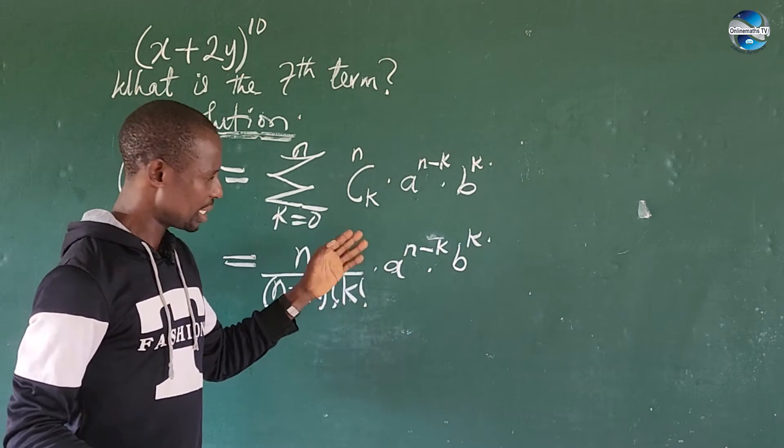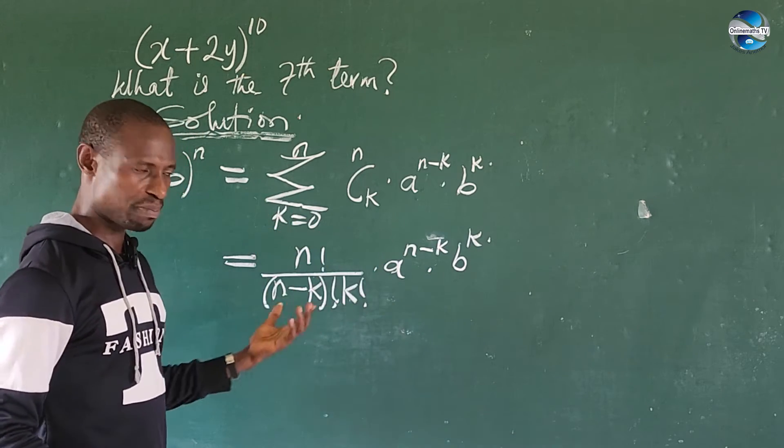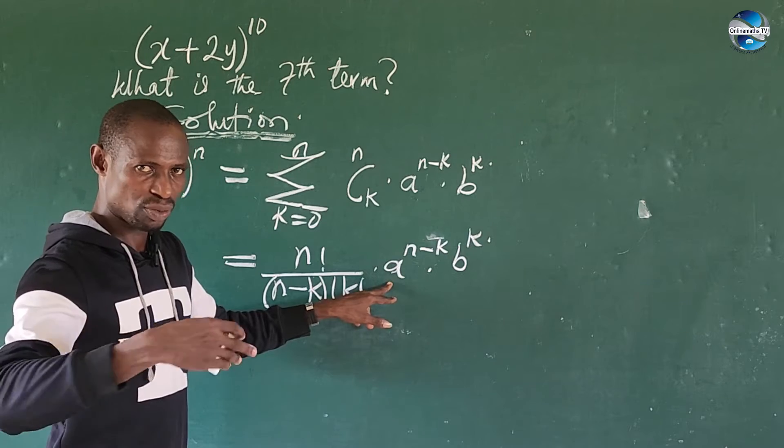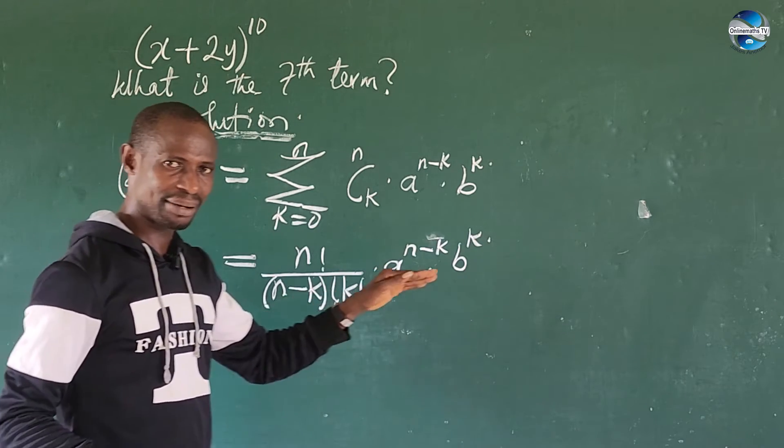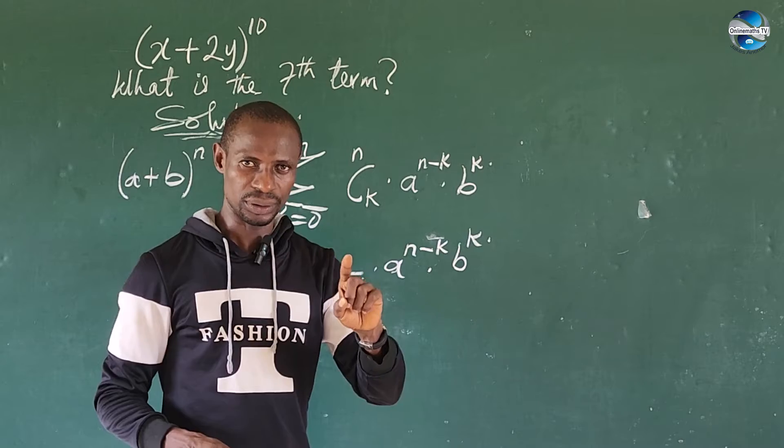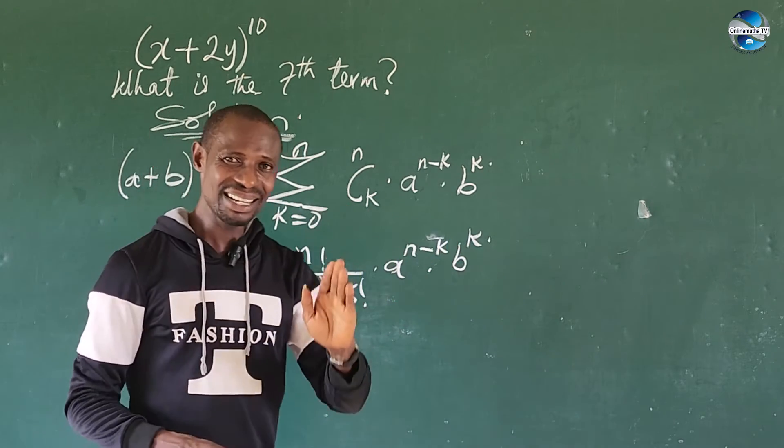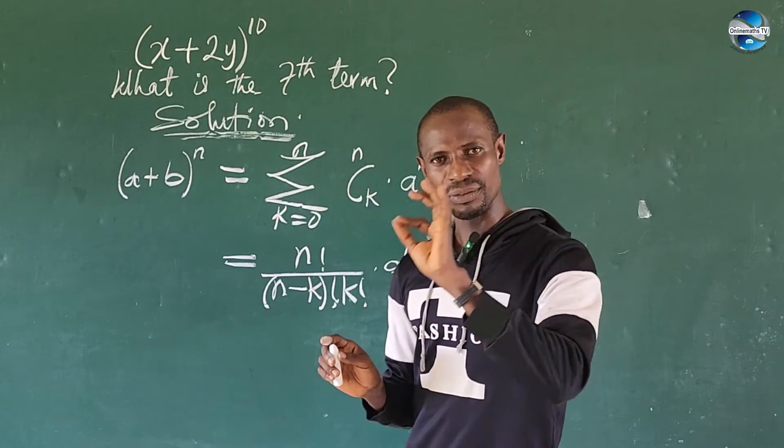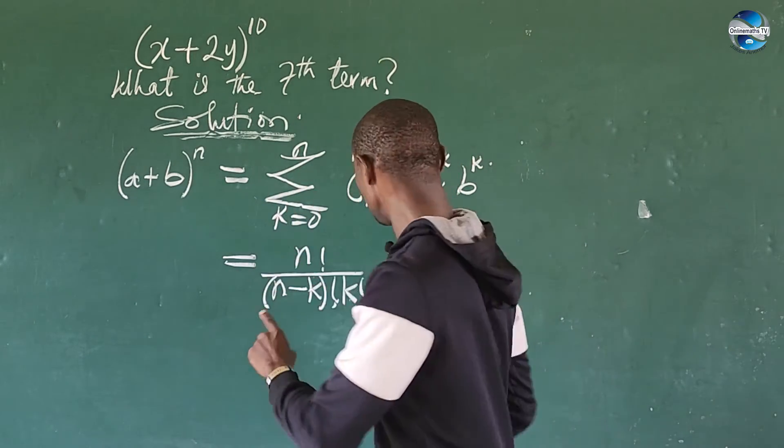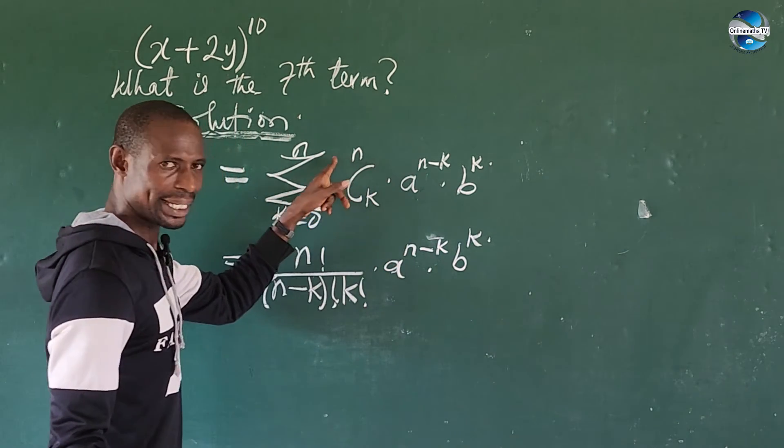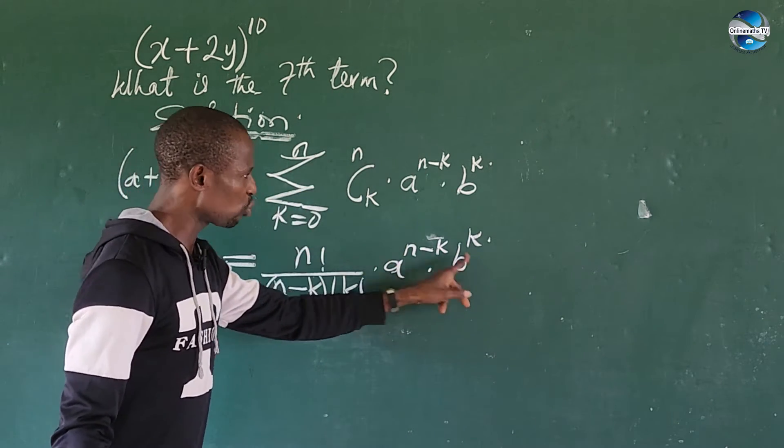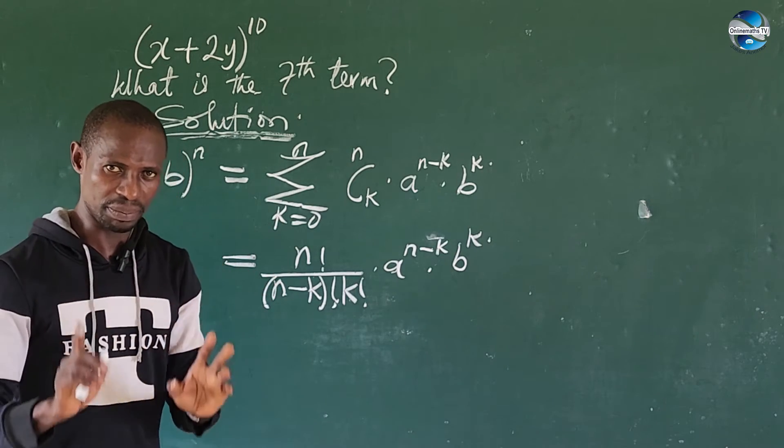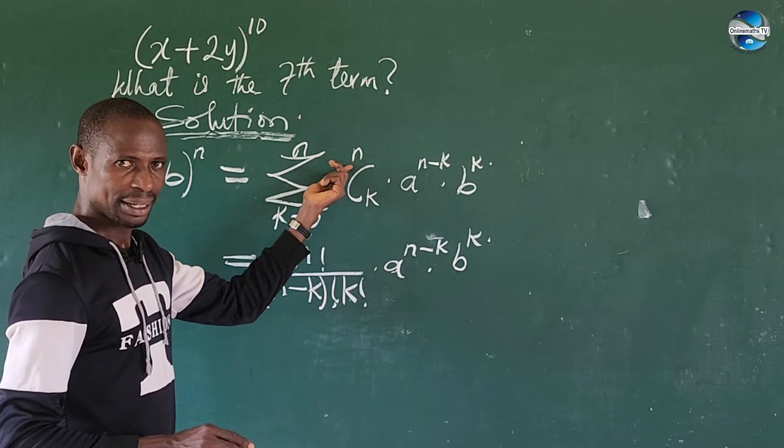Times a^(n-k) times b^k. What you should know about this binomial expansion is that in each of the terms as we progress, the power of a will be decreasing by 1, and b will be increasing by 1. But at each stage, the power of these two quantities put together must be equal to our n.